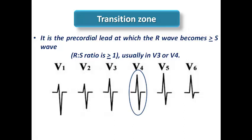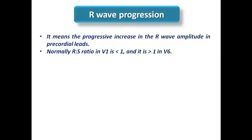Understanding the transition zone allows us to understand R-wave progression. R-wave progression means the progressive increase in the R-wave amplitude in precordial leads. Normally, for example, the R-S ratio in V1 is less than 1, and then it is more than 1 in V6. This is the normal R-wave progression we have seen in ECG interpretation and in the Schamroth ECG rules.